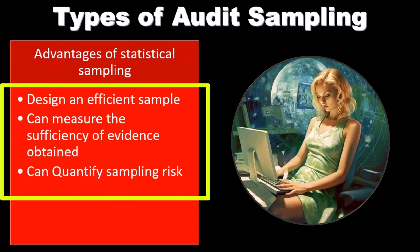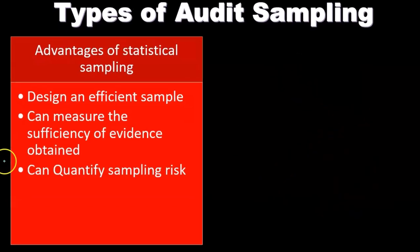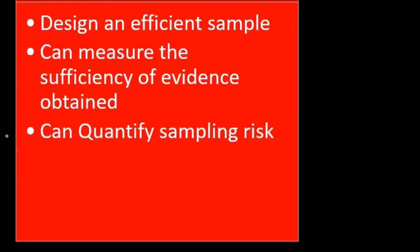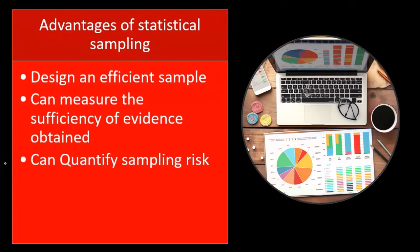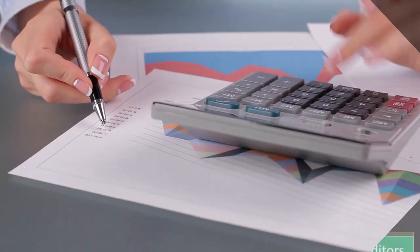Statistical sampling can also measure the sufficiency of evidence obtained. Once we have the evidence, we can have more accurate statistical measures as to how accurate the sample can be, as opposed to just saying this is what our sample says regarding this assertion and applying it out. We can give more specific types of calculations. Can quantify sampling risk — we can actually put a number to the sampling risk, rather than just setting risk at certain levels and seeing if the sample correlates.